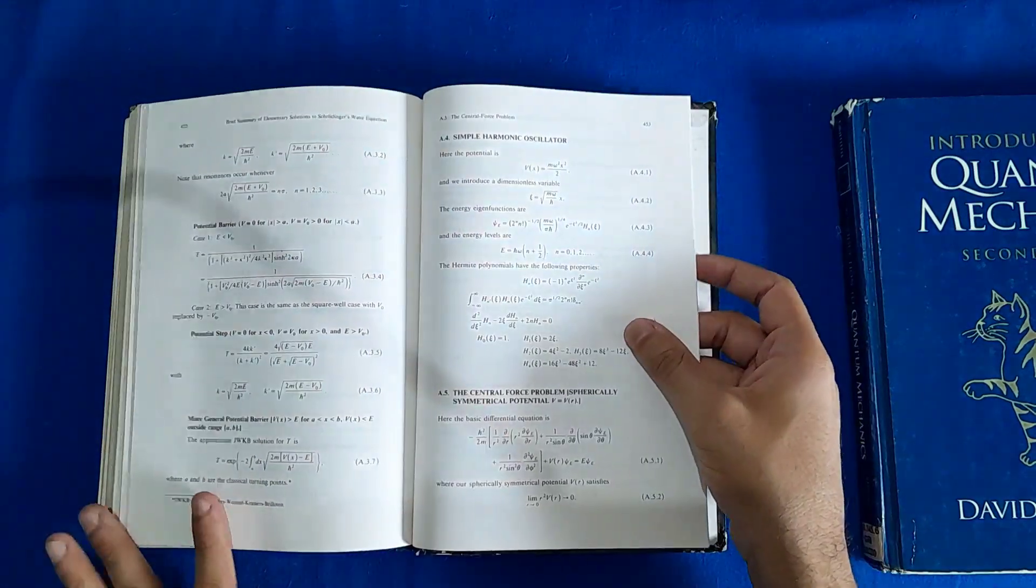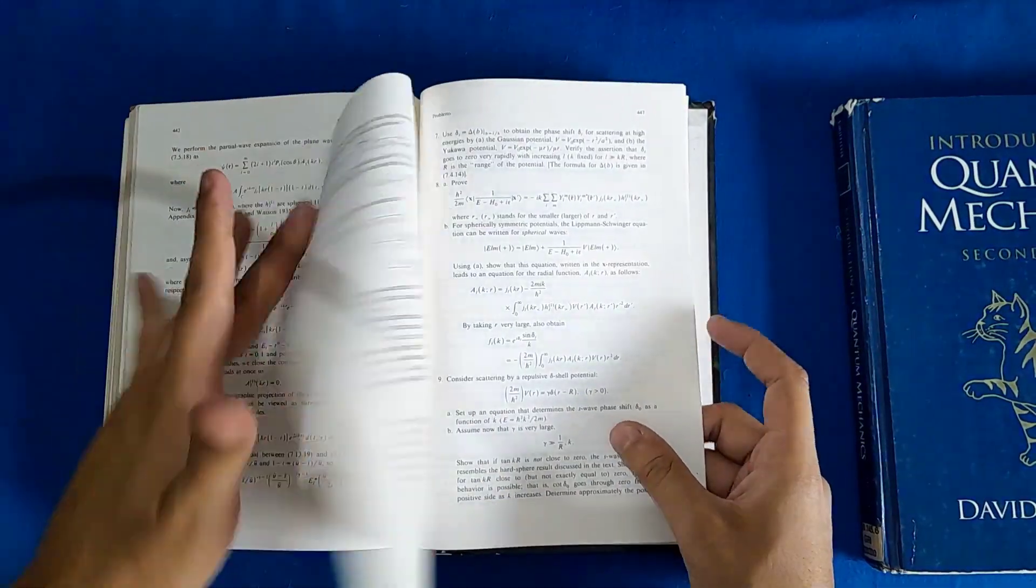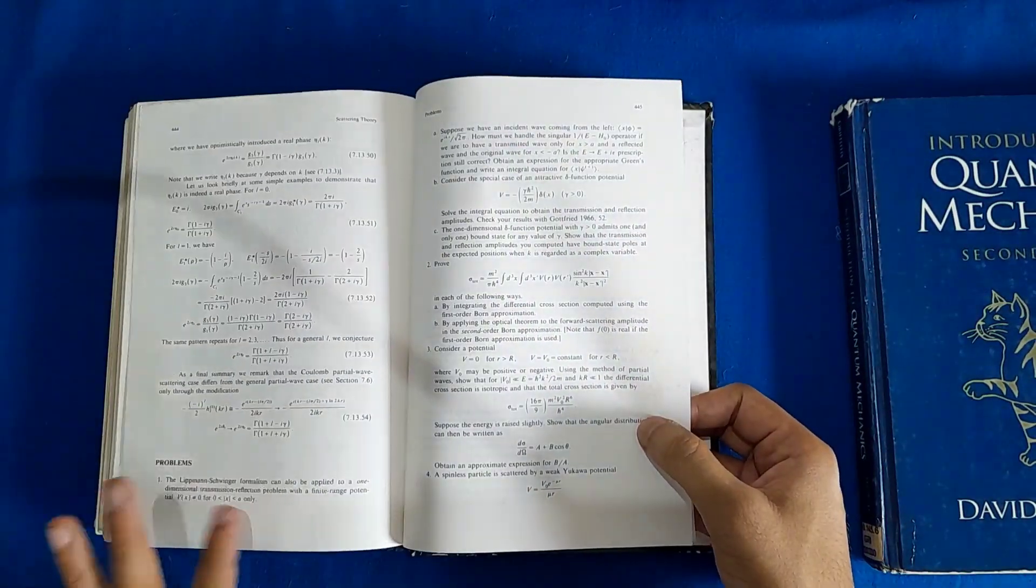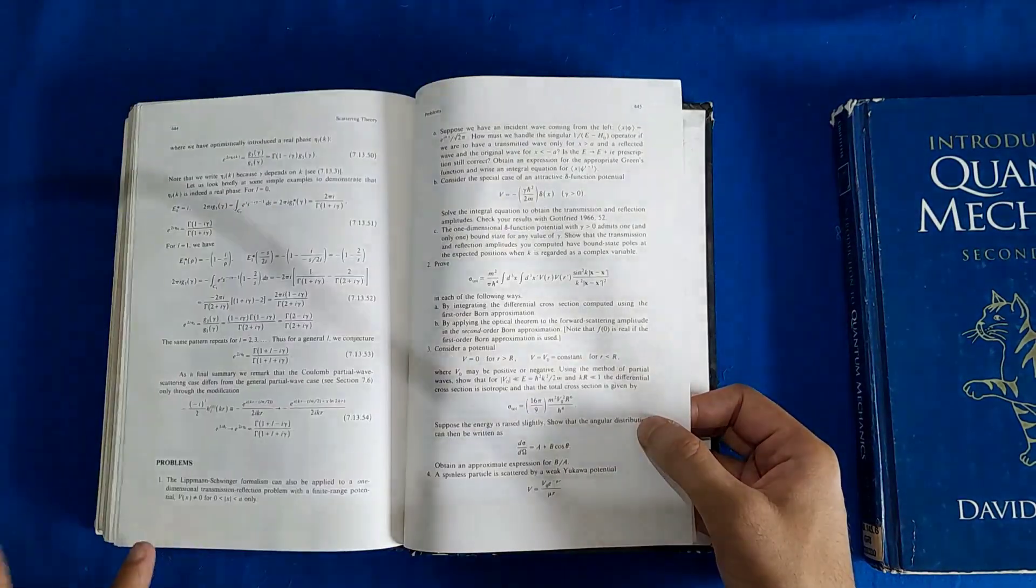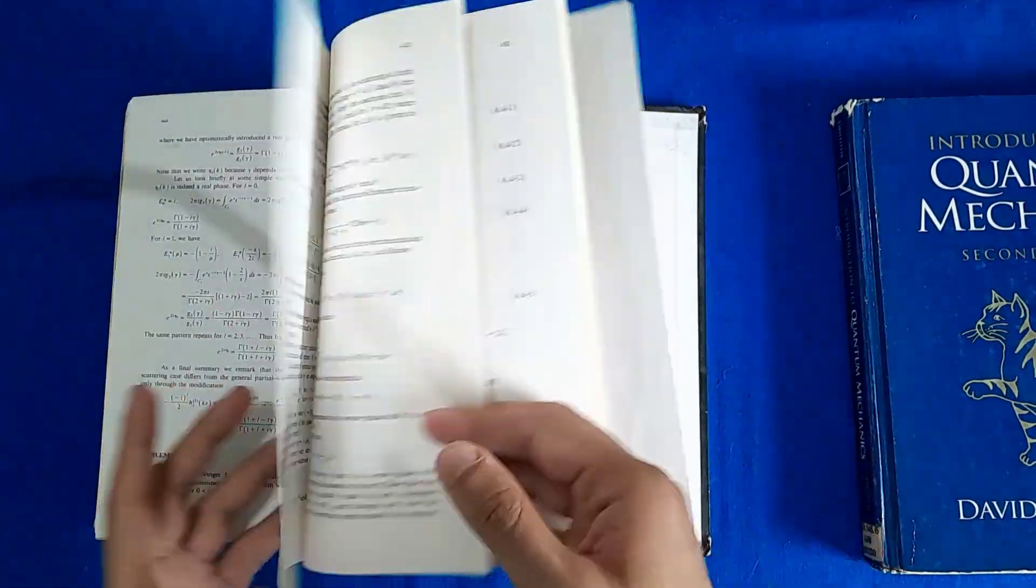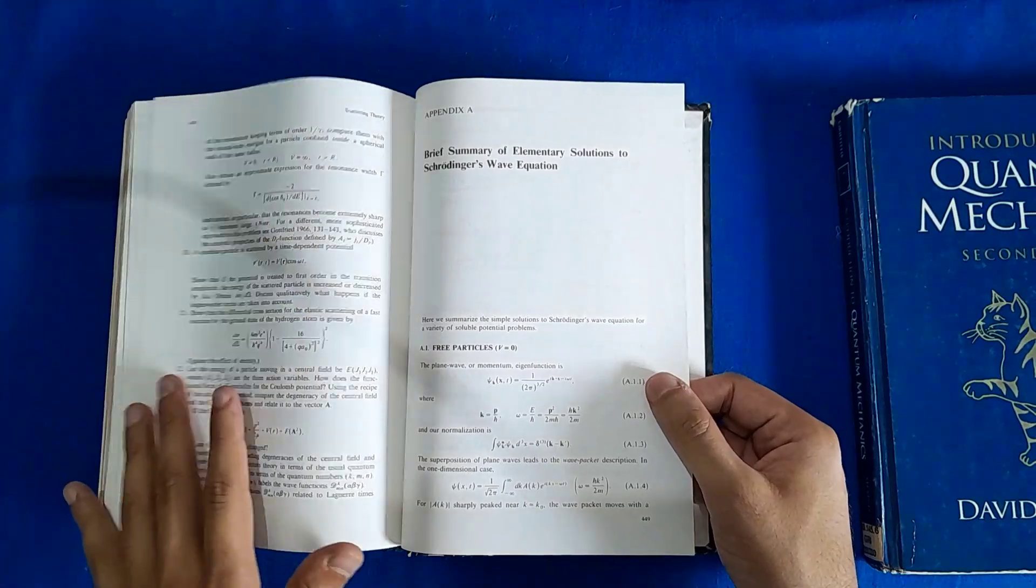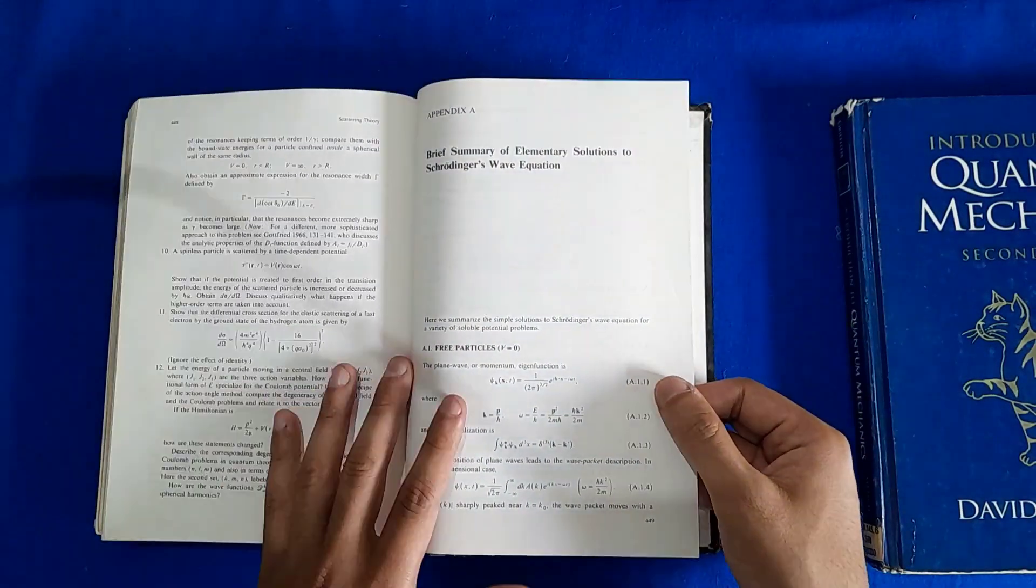These have problems, so they don't have problems within the text but they have problems at the end of each chapter. I'd also gone through these problems for the chapters that I had gone through in the masters. And then there's appendix. Yeah that's it.